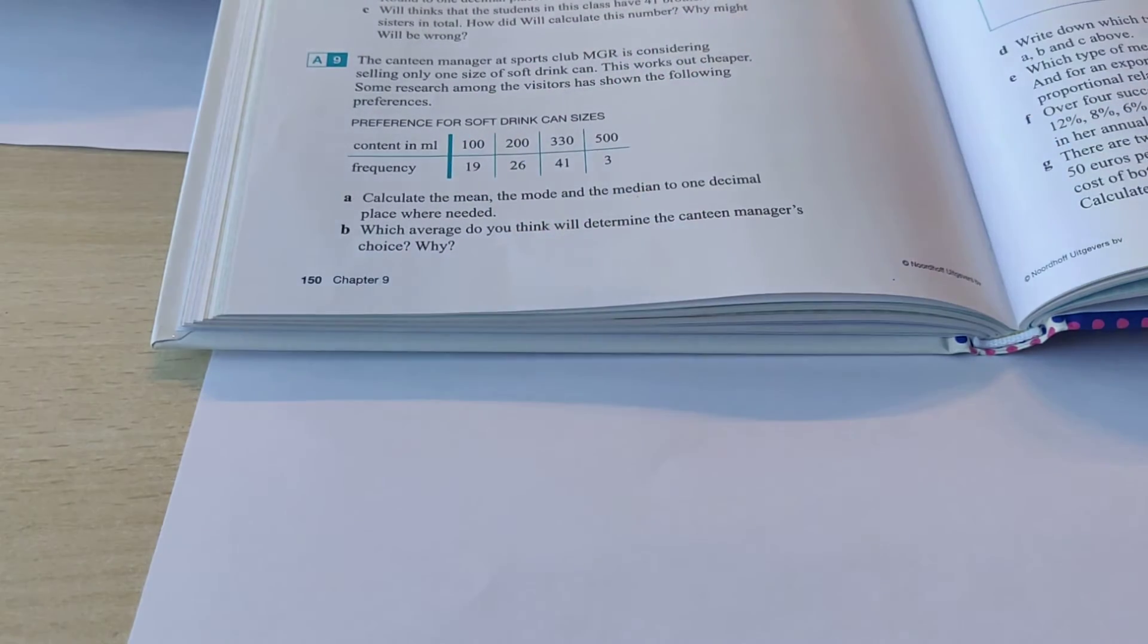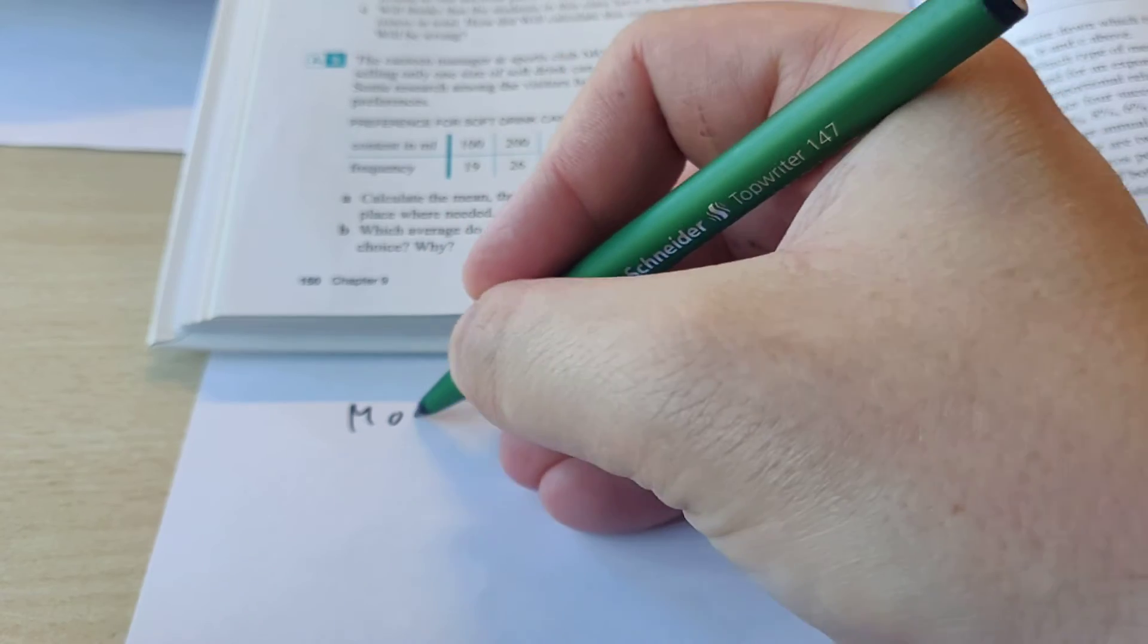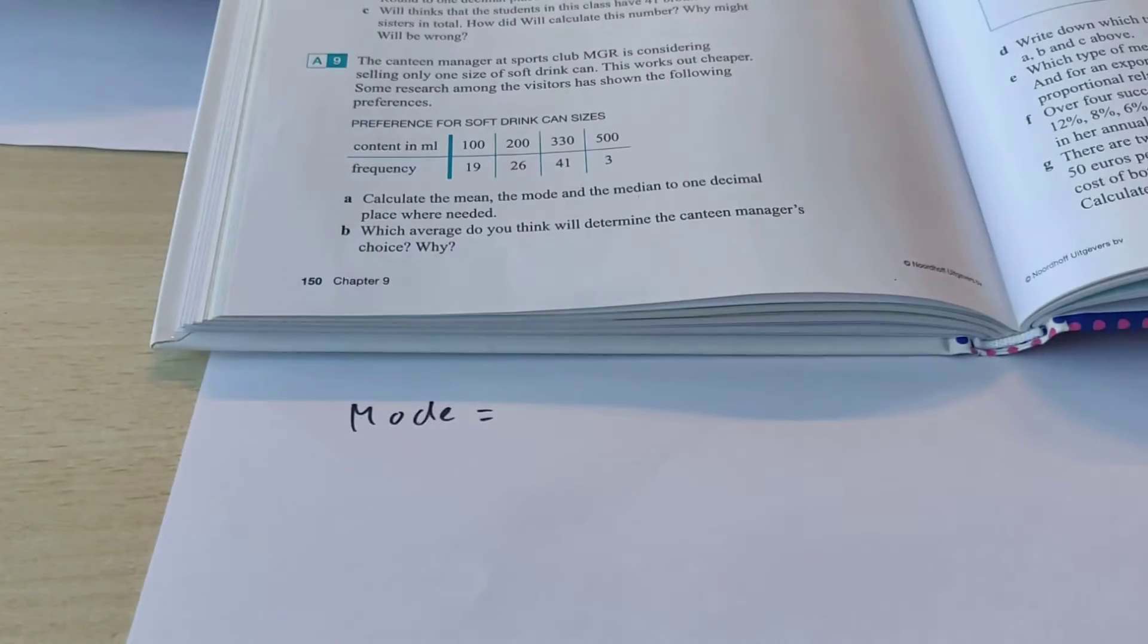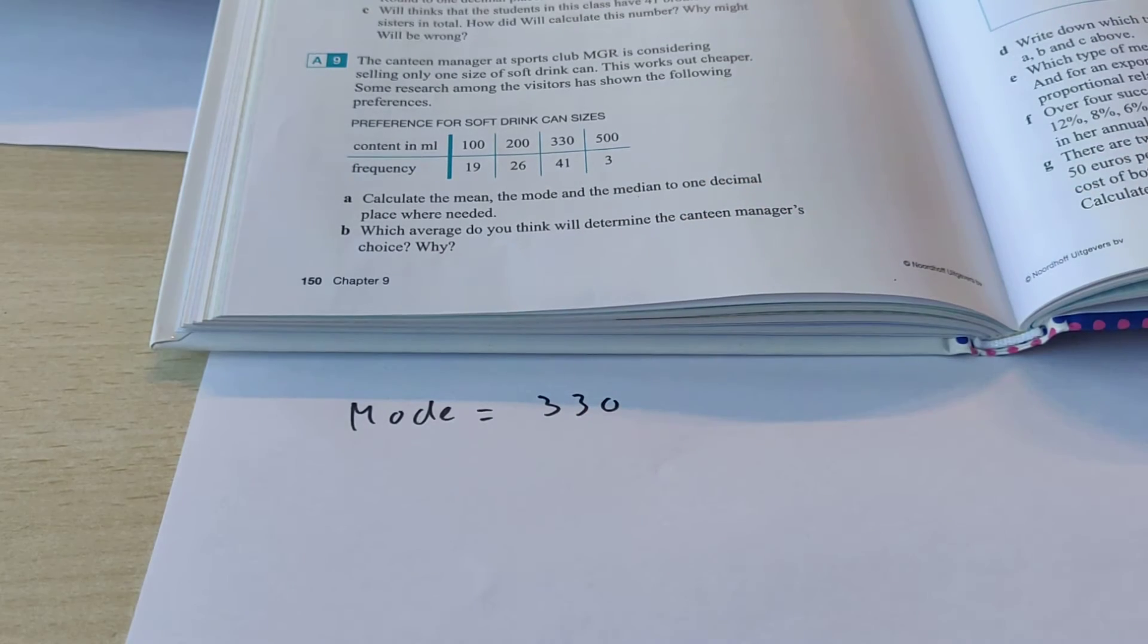We need to calculate the mean, mode and median and round off to one decimal place when needed. We're going to start with the easiest. The easiest would be the mode. The mode is the one that happens most often. So, in this case, that's 330. That's the one that most people want.